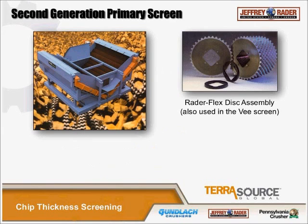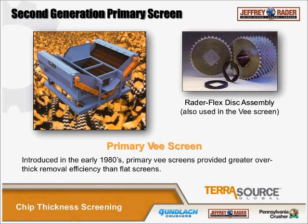The second generation primary screens, which came about in the early 1980s, were V-screens. These are very similar to the flat screens, except you bend them up on the sides and feed material into the middle, so the chips progress up either side of the V-screen and come off as accepts going through. These also use the RaderFlex shaft disc assemblies, and there are still a couple of these machines in operation in the world.